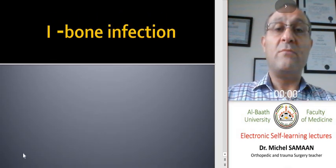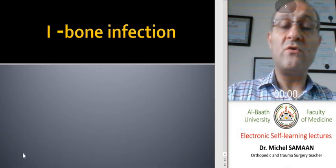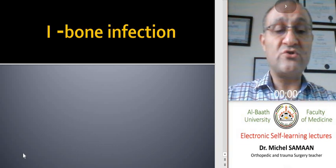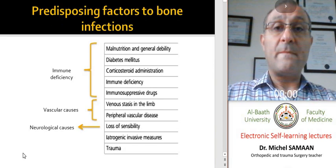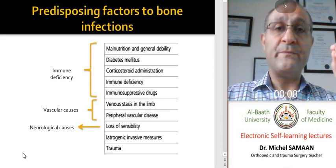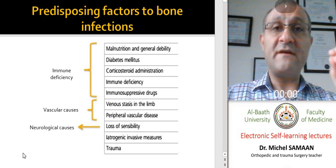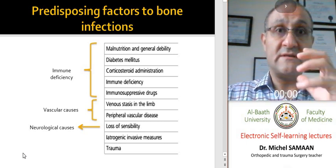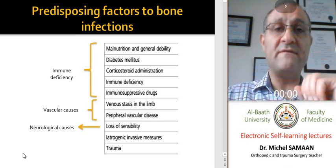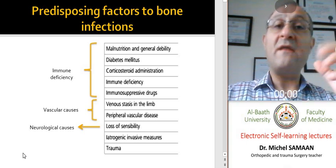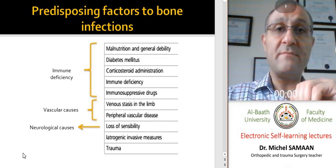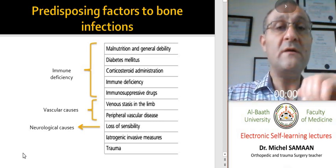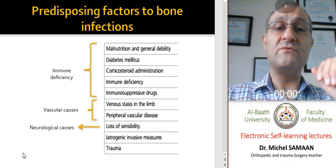Bone infection is called osteomyelitis. Osteomyelitis is the infection of bone and marrow. Bone tissue cannot be infected unless we have some predisposing factors because it has good defense mechanisms.